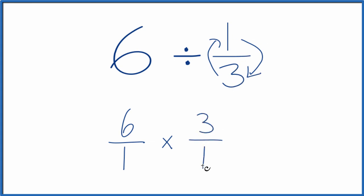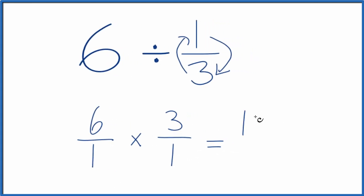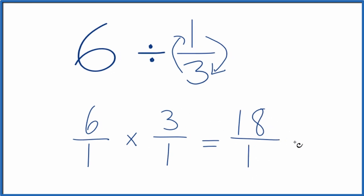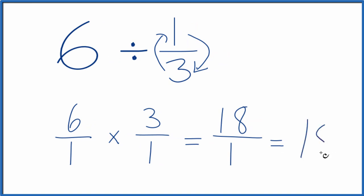3 over 1 is the reciprocal for 1/3. Now when we're multiplying fractions, we just multiply the numerators and then the denominators. So 6 times 3 is 18 and 1 times 1 is 1. So we end up with 18 over 1. And 18 divided by 1, that's just 18.